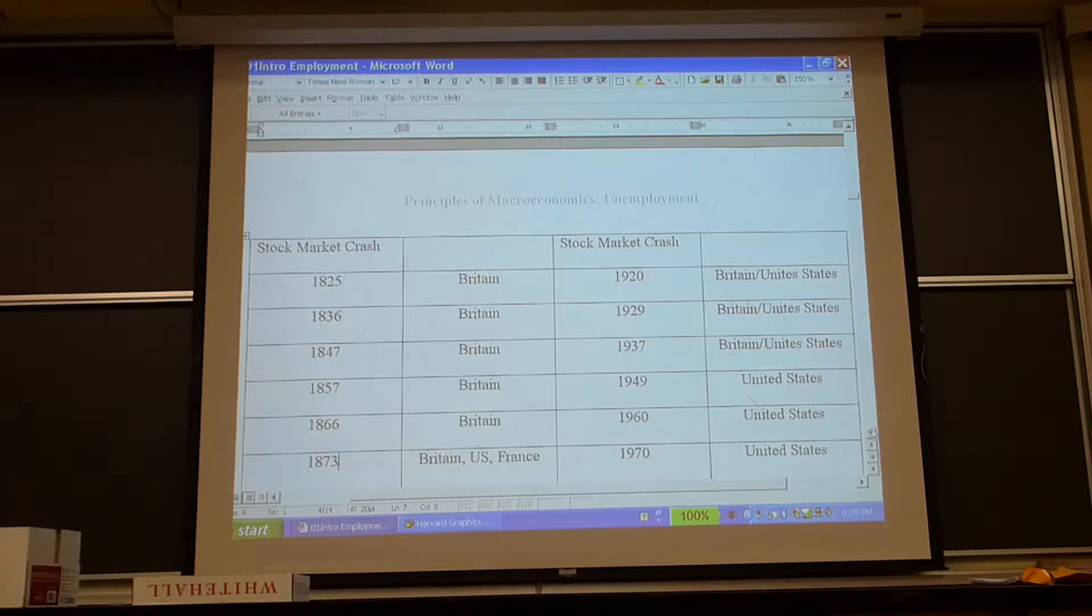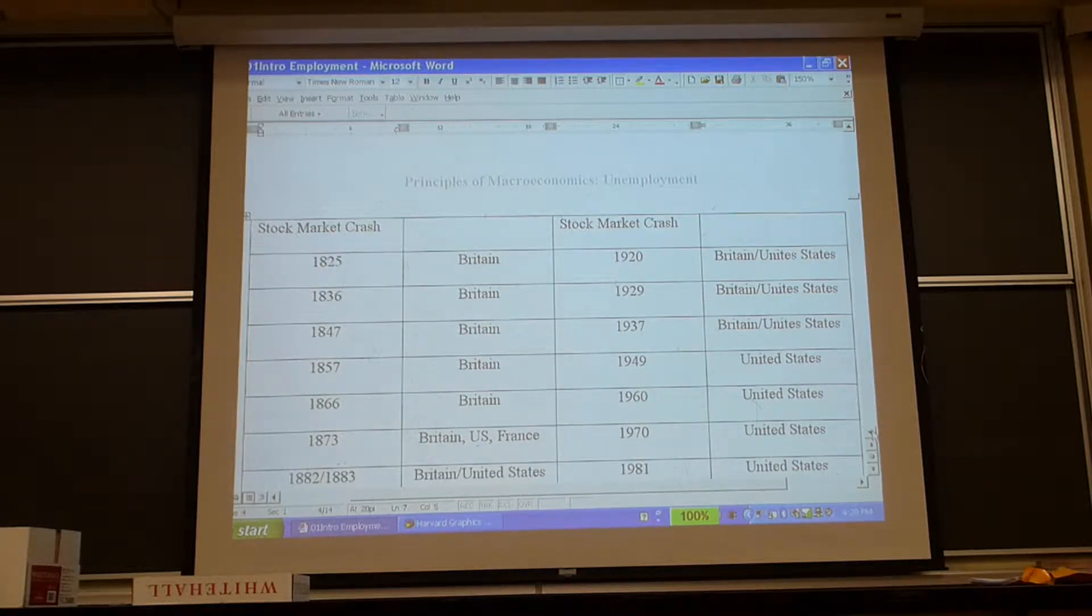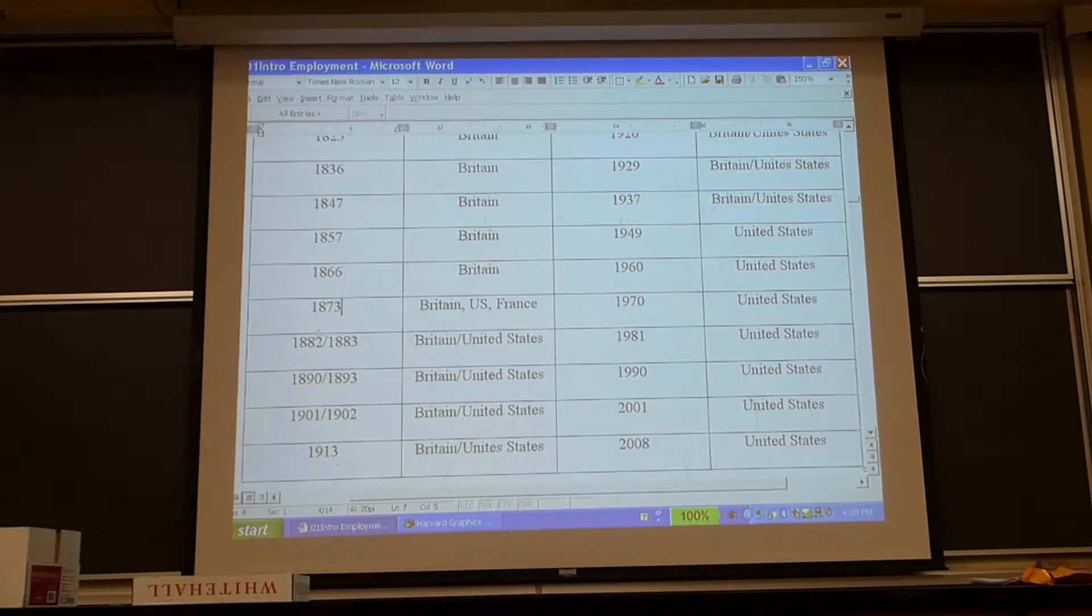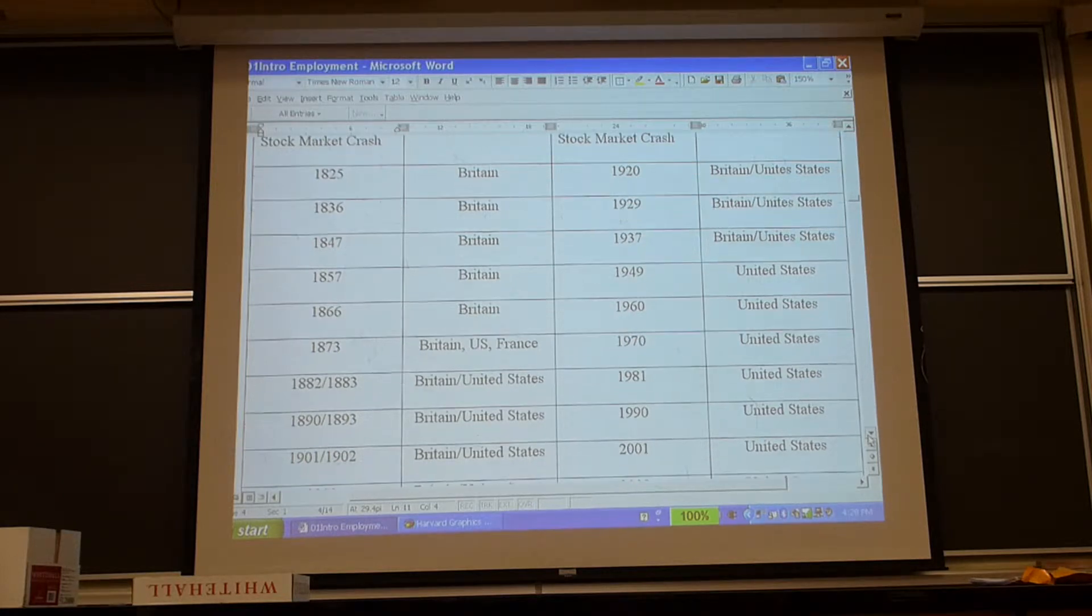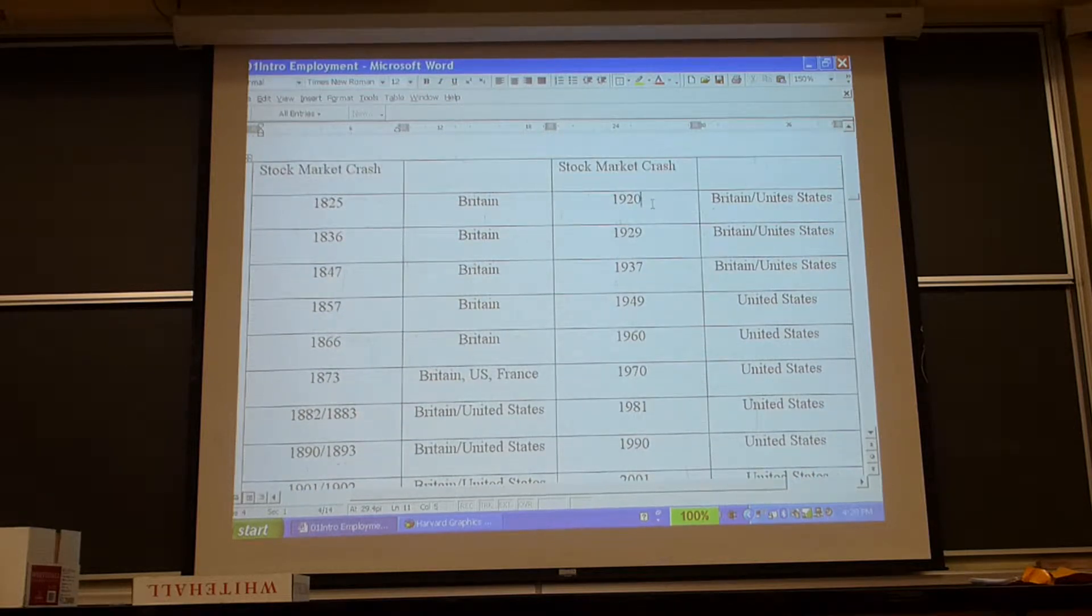This is 7, unusual, but perhaps it's caused by the fact that Germany, France, and the US essentially enter. Countries don't always have the stock market crash the same year. Britain 1873, Britain 1882, United States 83, Britain 90, United States 93. Almost exactly 10 years. 1913, notice, is before World War I. World War I interrupts that. 1920, again, 1929, again, 1937 there's 8 years, then 49. But notice it's 20 years from here to there. 1960, 70, 81, 1990.